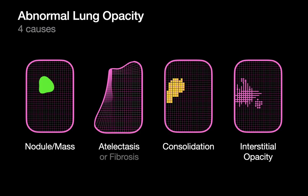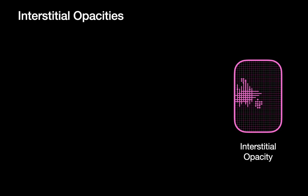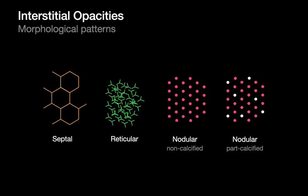There are four basic reasons why an abnormal lung opacity may appear. In this talk, we're going to be discussing interstitial opacities. There are four morphologic patterns of interstitial opacities we can distinguish on CT imaging: septal, reticular, non-calcified nodular, and part-calcified nodular interstitial patterns.